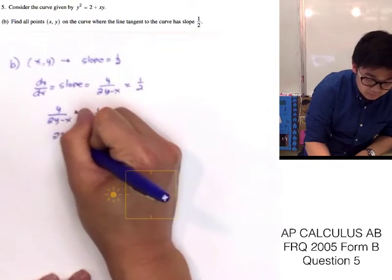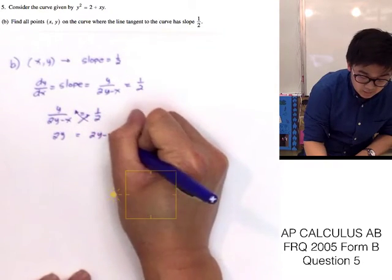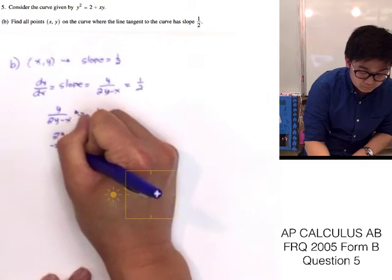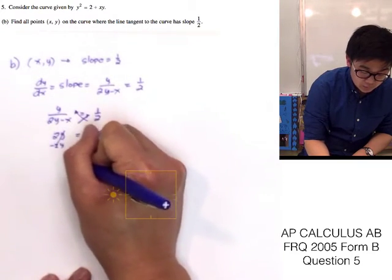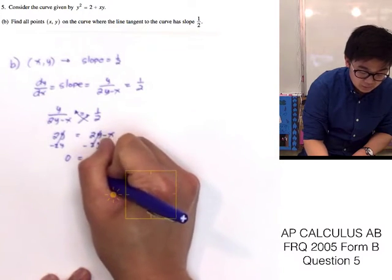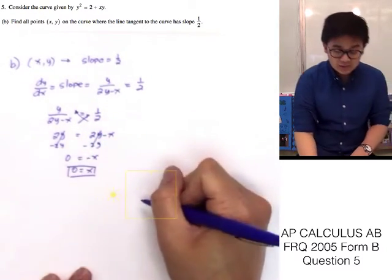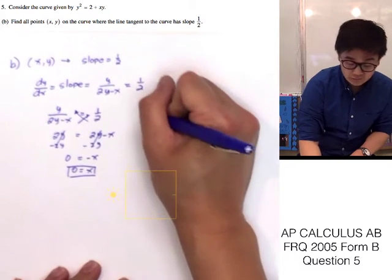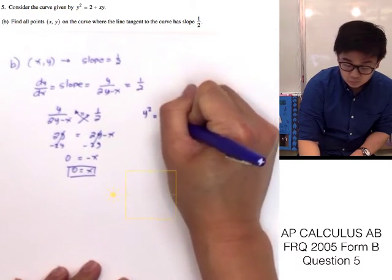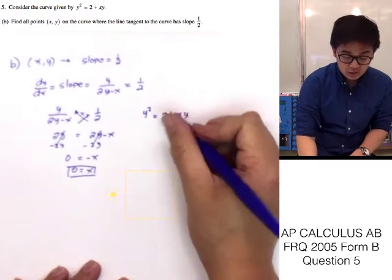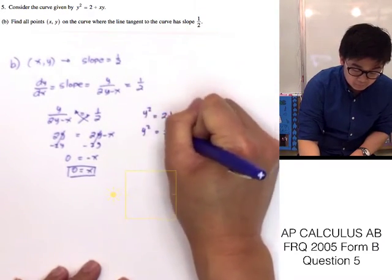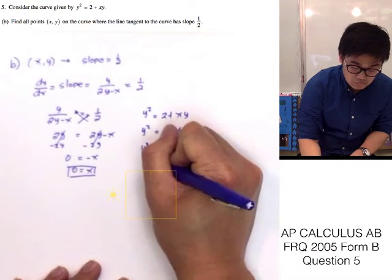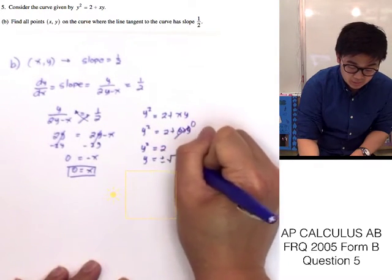Setting y over 2y minus x equal to 1/2, by cross multiplication we have 2y equals 2y minus x. Solving for x, we get negative x equals 0, so x equals 0. Now let's find y by plugging x equals 0 into the original curve y squared equals 2 plus xy. This gives y squared equals 2.